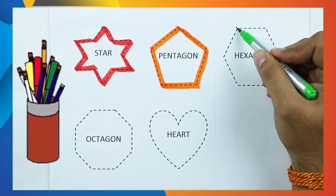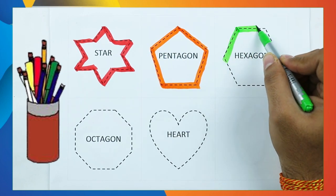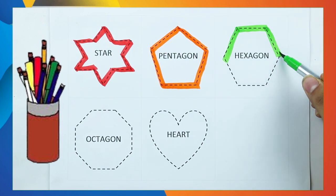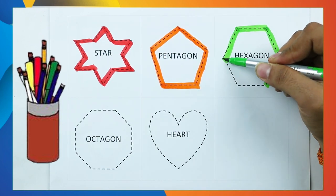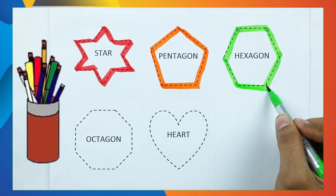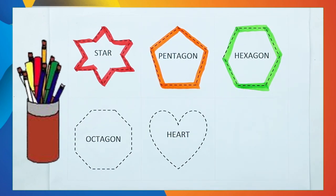Hexagon. One line, two line, three line, four line, five line, six line. It's a hexagon.